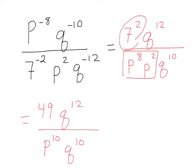Now I look on top and bottom — is there anything on top that's also on bottom as far as bases? There is. I've got a q on top and a q on bottom. When you have like bases and you're dividing, what do you do with their exponents? Subtract.